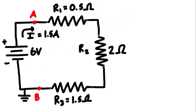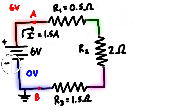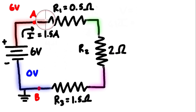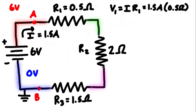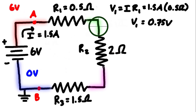Let's draw a ground on the circuit to serve as our reference for zero voltage, then label and shade in four nodes. The blue node is 0 volts; the red node is 6 volts because it crosses the voltage source and jumps 6 volts from the blue side to the red side. The voltage drop across the first resistor is V1 = I × R1 = 1.5 A × 0.5 Ω = 0.75 volts, so this node drops from 6 V to 5.25 volts.